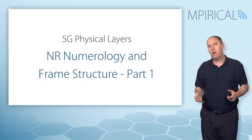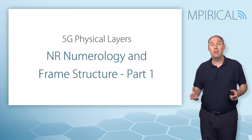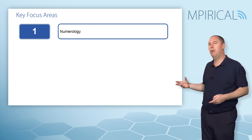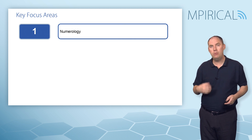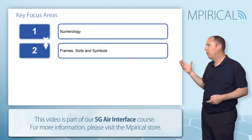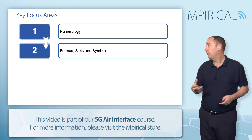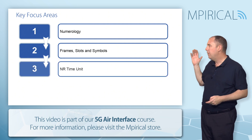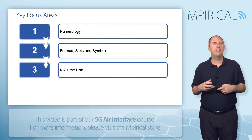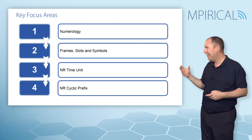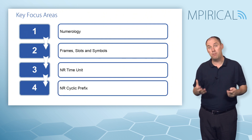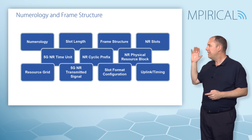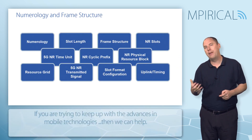A key part of the 5G air interface is the frame, and that is going to be impacted by the numerology. So we need to start by detailing what we mean by numerology within 5G. We have to look at the frames, the slots, and the symbols, and how that all relates to a 5G deployment. We also need to introduce things like the new radio time unit as well as the cyclic prefix. Remember, this is part 1 — in part 2 we'll go into other aspects in more detail. So these are all the different things we're going to look at across part 1 and part 2.